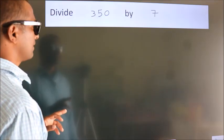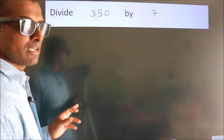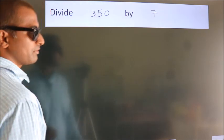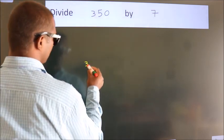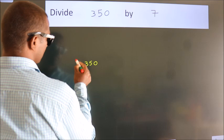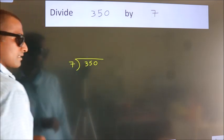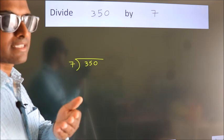Divide 350 by 7. To do this division, we should frame it in this way. 350 here, 7 here. This is your step 1. Next.